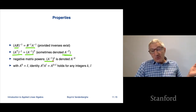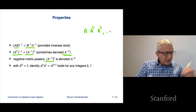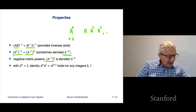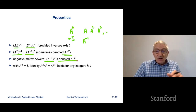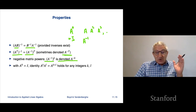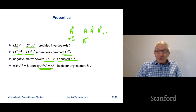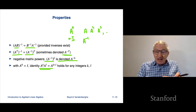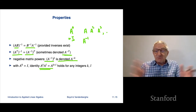Now that we have the inverse, we can talk about all integer powers of a square invertible matrix. We have A, A-squared, A-cubed and so on; A to the 0 equals I; and now A-inverse means A to the minus 1, A-inverse-squared means A to the minus 2, and so on. And this beautiful property holds: A to the K times A to the L equals A to the K plus L — the exponents add when you take a product, even if K and L are negative.